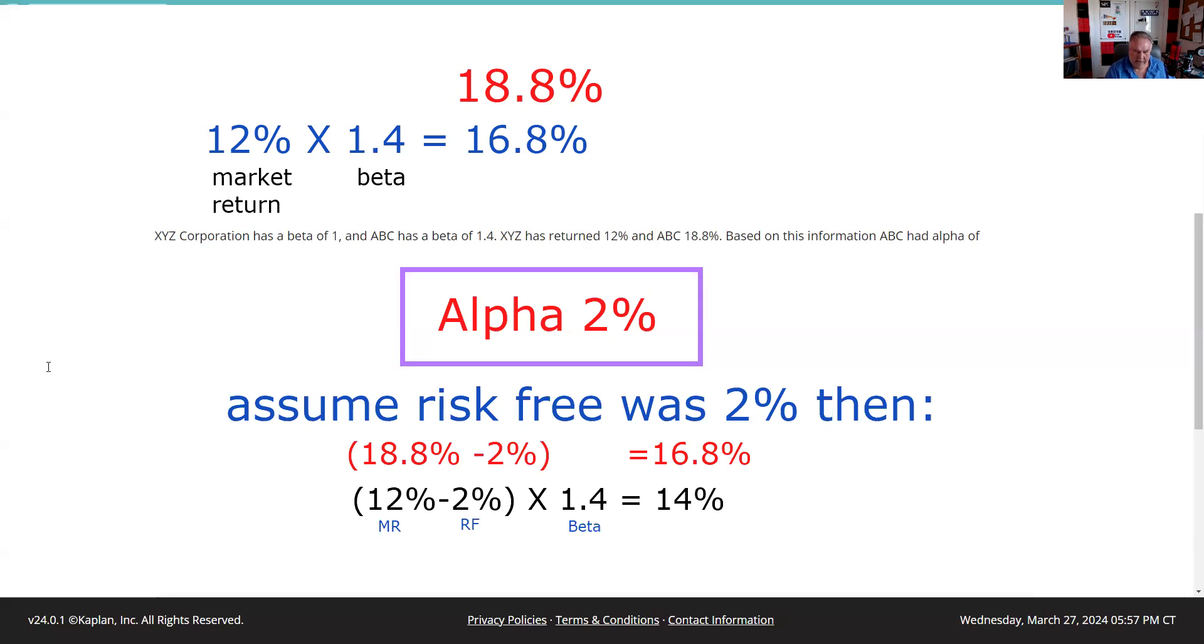And remember, we got 18.8%, but we could have got 2 without risking our capital. And so we got 16.8%. So if they would have asked that way and given us the risk-free return, the answer would have been 2.8%.